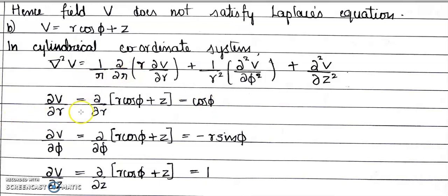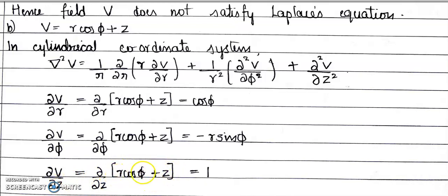Computing the first-order derivatives: ∂V/∂R = cosφ (differentiating R cosφ + z with respect to R). ∂V/∂φ = −R sinφ (since the differentiation of cosφ is −sinφ, and R and z are constants). ∂V/∂z = 1 (since R and φ terms are constant, only the z term differentiates to 1).